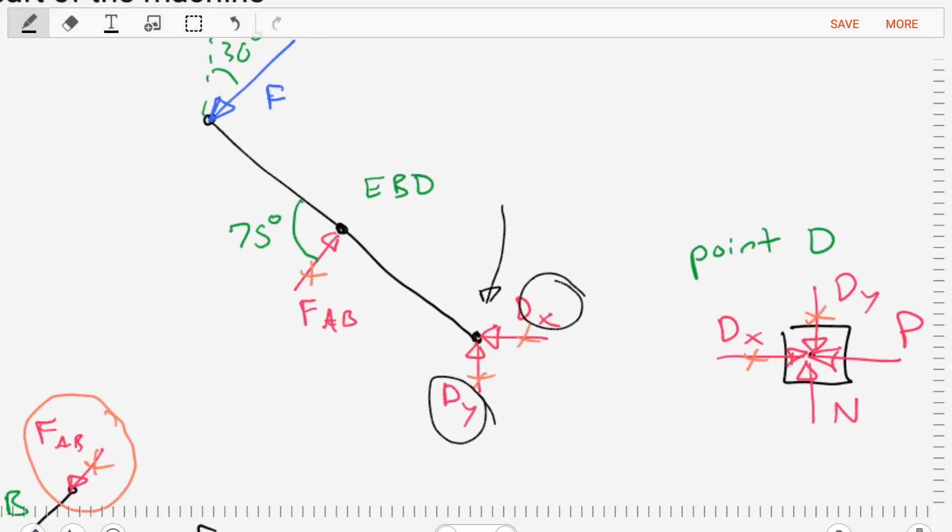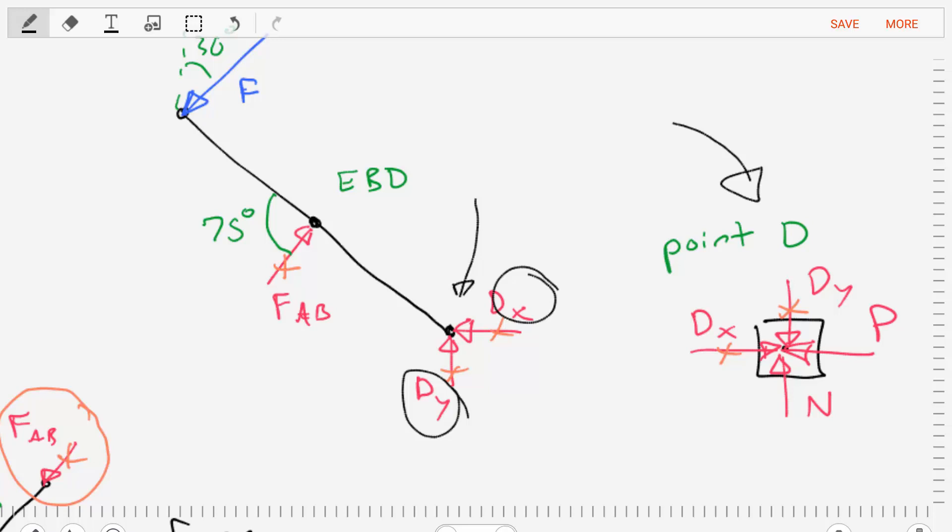Let's also then analyze point D, that connection pin between member EBD and the can crusher. In that point, we're going to do the same thing we did in our last example. Any forces that are transmitted between free body diagrams need to be equal and opposite. So DX is to the left in the old diagram and the new one is to the right, equal and opposite.